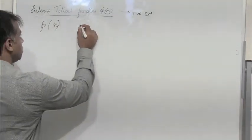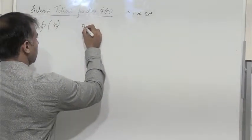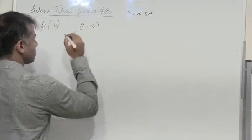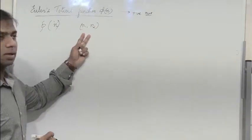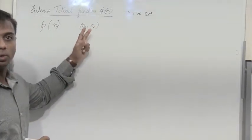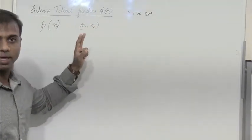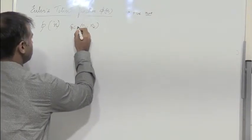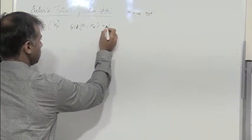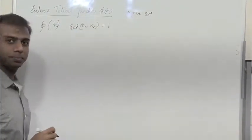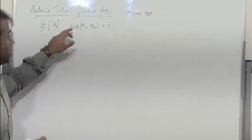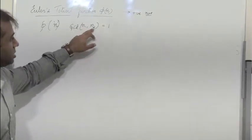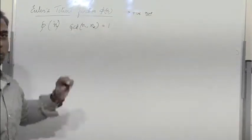Consider two numbers n1 and n2. These two numbers are considered to be relatively prime if the GCD of these two numbers is equal to 1 — that means the greatest common number which divides both of them is 1.